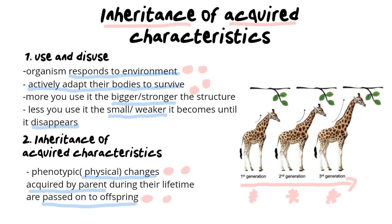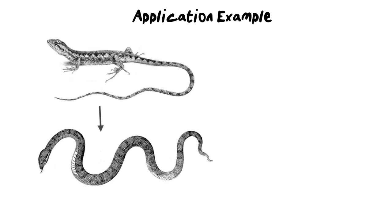So when you are explaining this in an exam, you need to use these two principles, use and disuse, and the inheritance of acquired characteristics, those two, to explain any kind of example you may meet. Now what I would like to do now is just a very quick application example. So if you ever come across this in an exam, you know exactly what to do, because they don't always give you the giraffe example. They can give you any animal. And they'll ask something like, using Lamarck's theory, or how would have Lamarck explained the way in which lizards lost their legs and became snakes?